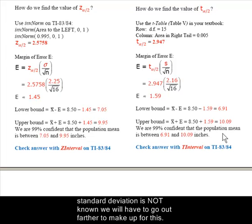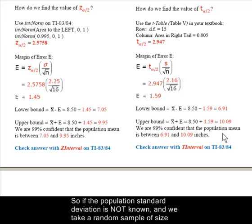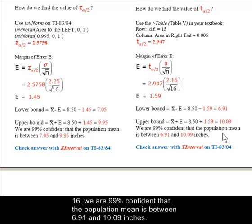Now when the population standard deviation is not known, we will have to go out farther to make up for this. So if the population standard deviation is not known and we take a random sample of size 16, we are 99% confident that the population mean is between 6.91 and 10.09 inches.